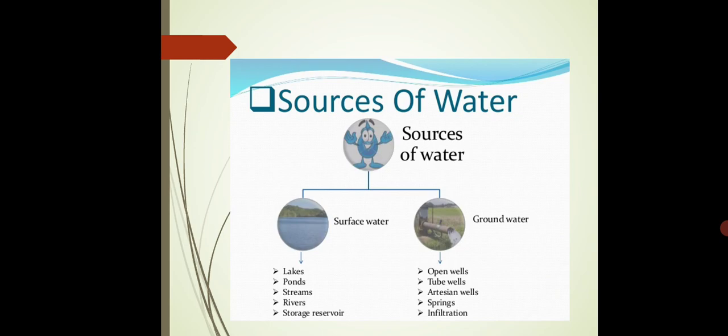So surface water includes lakes, ponds, streams, rivers and some storage reservoir. Lakes is the small space where water has been accumulated or water has been stored. Streams is the river which is flowing within the bed or within the bank of channels. That is known as streams, rivers, and some storage reservoir.